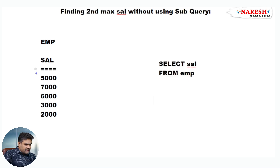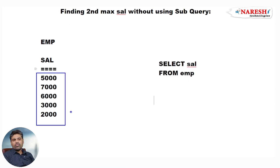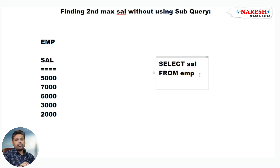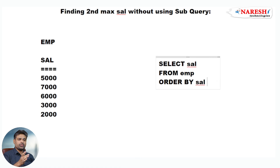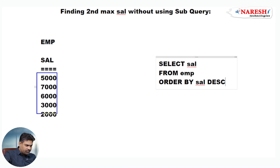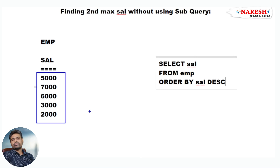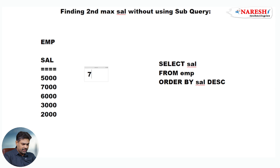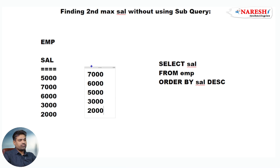I want to arrange these salaries in descending order. So to arrange in descending order, use the ORDER BY clause — ORDER BY salary DESC. Now these salaries we get in descending order: 7000, 6000, 5000, 3000, 2000, like this. Salary is now arranged in descending order.